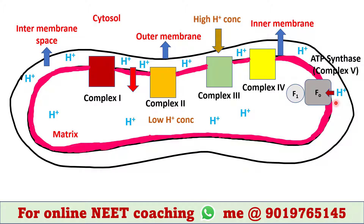ATP synthase is also called Complex V. It is a transmembrane enzyme with two parts: F0, which is embedded in the inner membrane, and F1, which faces the matrix. The movement of protons through ATP synthase provides energy that is used to generate ATP from ADP and inorganic phosphate. This is how ATP gets generated during electron transfer.